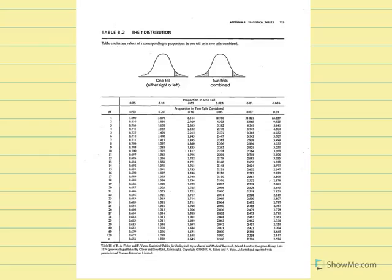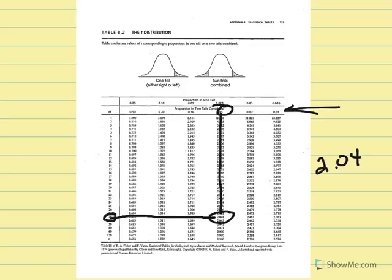In our t distribution, degrees of freedom equal 28. We're conducting a two-tailed test at 5%, and we see where those two things intersect. We get a critical t equal to plus or minus 2.048, because of the two-tailed test.